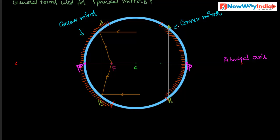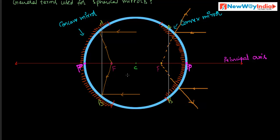In the case of a convex mirror also, if a ray of light is incident on the mirror parallel to the principal axis, after reflection these rays appear to be diverging from a single point. That point is called the principal focus of the convex mirror. So principal focus is a point on the principal axis where a beam of light parallel to the principal axis, after reflection, either actually meets or appears to meet. It is denoted by capital letter F.